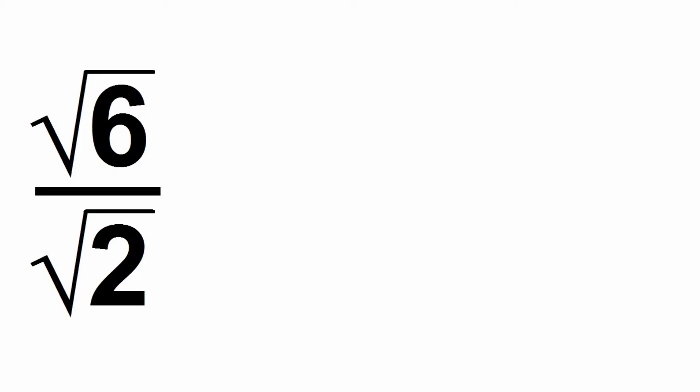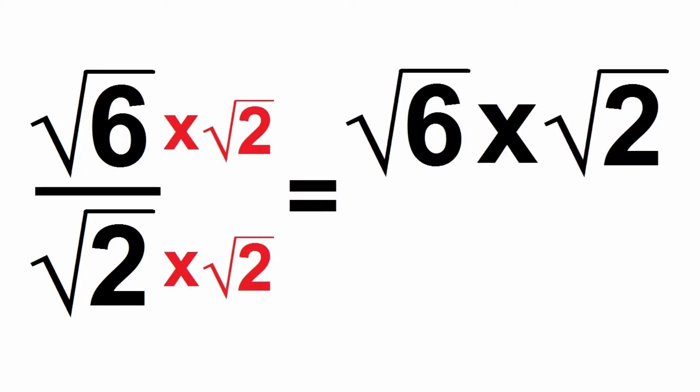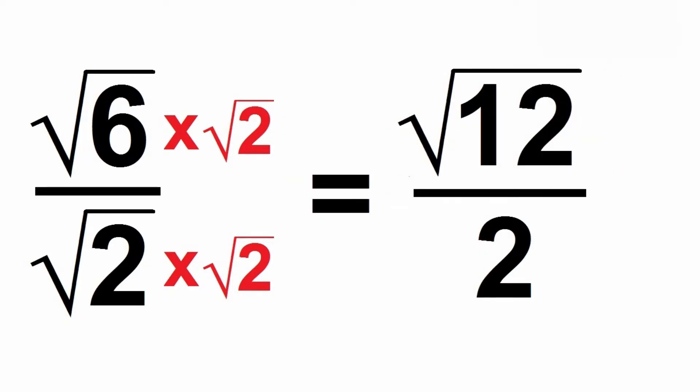Let's try one last example. Suppose we had the square root of 6 over the square root of 2. If we multiply the numerator and the denominator by the square root of 2, we would get root 6 times root 2 over 2. Root 6 times root 2 is root 12, so we would get the square root of 12 over 2.